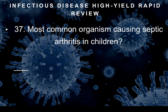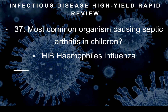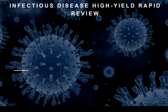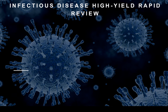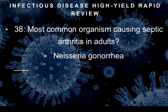Question thirty-seven: Most common organism causing septic arthritis in children — not adults, children. Pay attention in questions — they can mix children, adults, and elderly, sometimes with different presentations and causes. In children, septic arthritis is caused by Haemophilus influenzae (H. flu). Question thirty-eight: Most common organism causing septic arthritis in adults? In adults it's Neisseria gonorrhoeae — Neisseria gonorrhea, septic arthritis in adults.